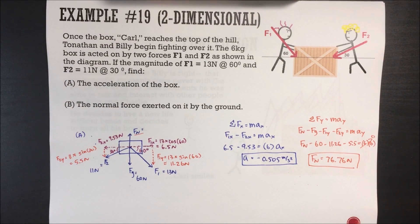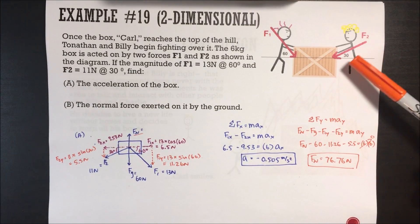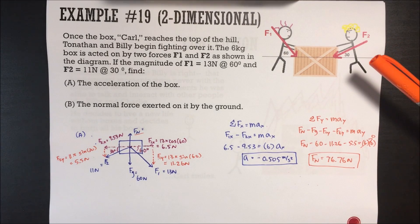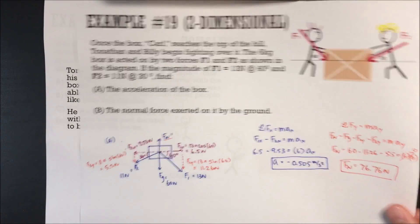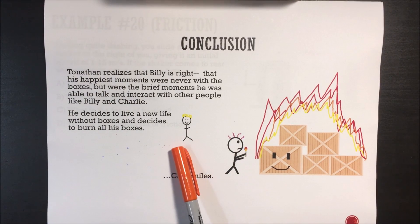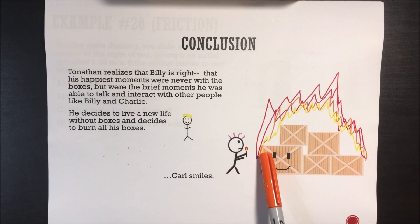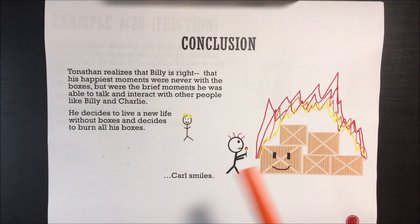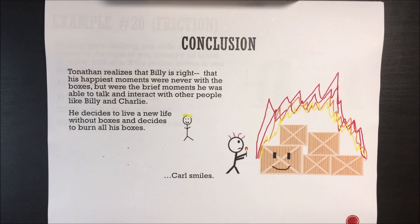Finally, exhausted, Billy stops and says: 'Why do you love boxes? You can push them, kick them, and pull them, but they will never respond to you.' In conclusion, Tonathan realizes that Billy is right — that his happiest moments were never with the boxes, but were the brief moments he was able to talk and interact with other people, like Billy and Charlie. He decides to live a new life without boxes and decides to burn all of his boxes. Carl smiles. Thanks for watching.